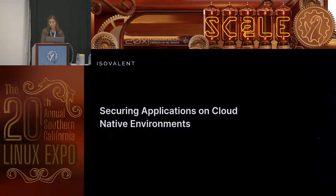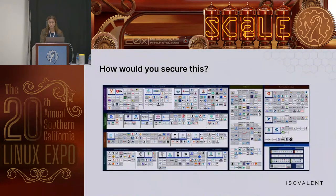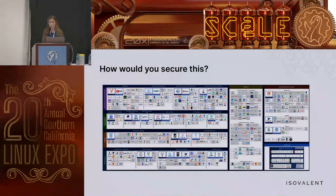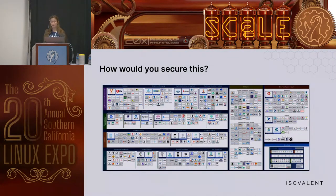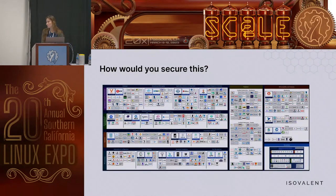Securing applications on cloud native environments — how would you secure this? This is the cloud native landscape as of 2022. If you take a look at this picture, you might get overwhelmed — there are a lot of applications running. Prioritizing the projects and applications where you have the most risk and the least trust is probably a good way to get started. Basically, secure the basic components first.